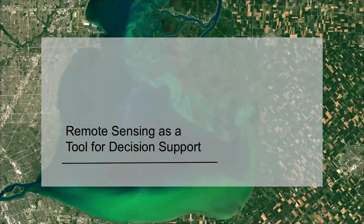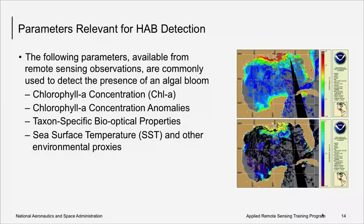So how can remote sensing be used as a tool for decision support? In today's presentation we will approach this topic from the perspective of coastal marine HABs. We have reviewed the parameters or data products used in identifying algal blooms and for use in harmful algal bloom forecasting systems. These include chlorophyll A concentration, the chlorophyll A anomaly, taxon-specific bio-optical properties, and sea surface temperature, which can be used on its own and also as a proxy for other environmental parameters such as nutrients.